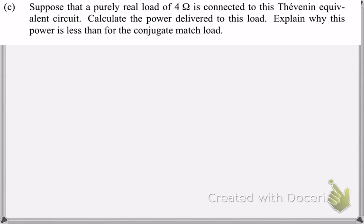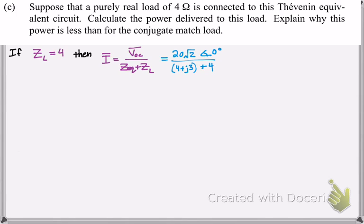So part C says suppose that a purely real load of 4 ohms is connected to the Thevenin equivalent circuit. Calculate the power delivered. Well, if we have ZL is equal to 4, then we're going to solve for current again. Same process as before. We kind of did this already, except the only difference is that ZL is just 4. Instead of 4 minus J3, now it's just 4. So that's a big difference down there.